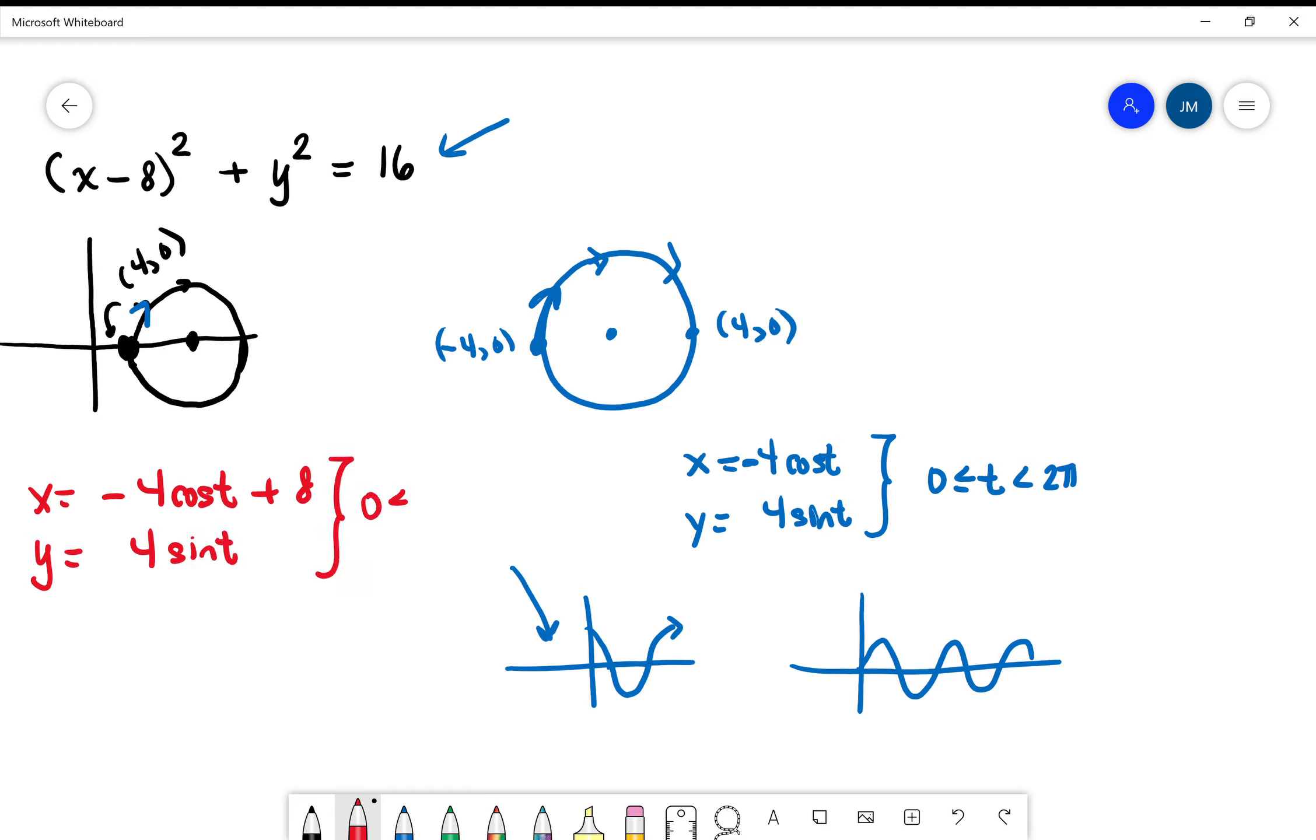And again, trying to keep it on that magical domain of 0 to 2 pi to make it one revolution, there we have it. So this right here is one of the many ways to parameterize that circle.